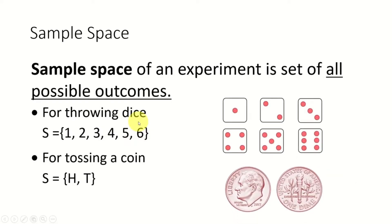The third concept is the sample space. The sample space of an experiment is the set of all possible outcomes. For example, if you throw a dice, the set of all possible outcomes is one, two, three, four, five, or six — so the sample space is the set containing elements one to six. If you take tossing a coin as an experiment, the sample space consists of head and tail.